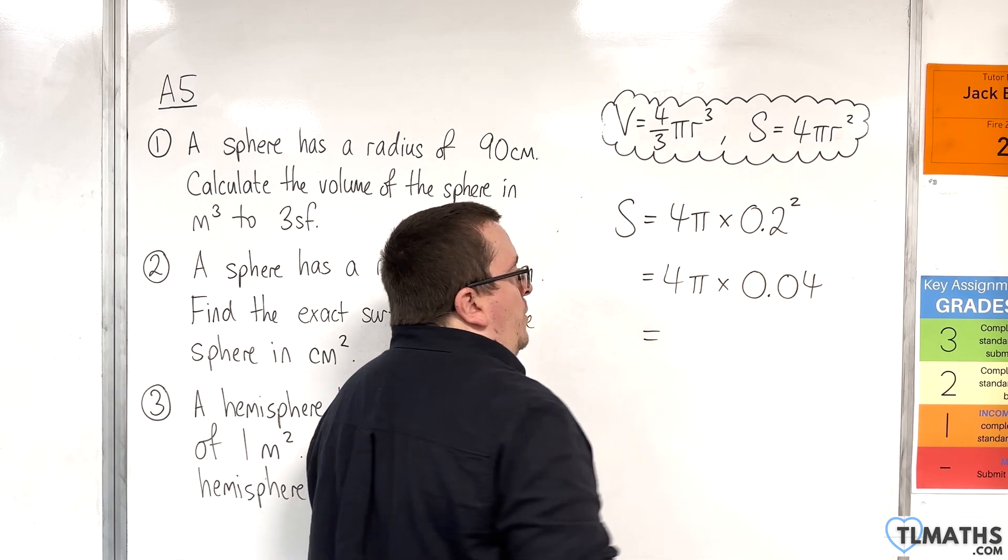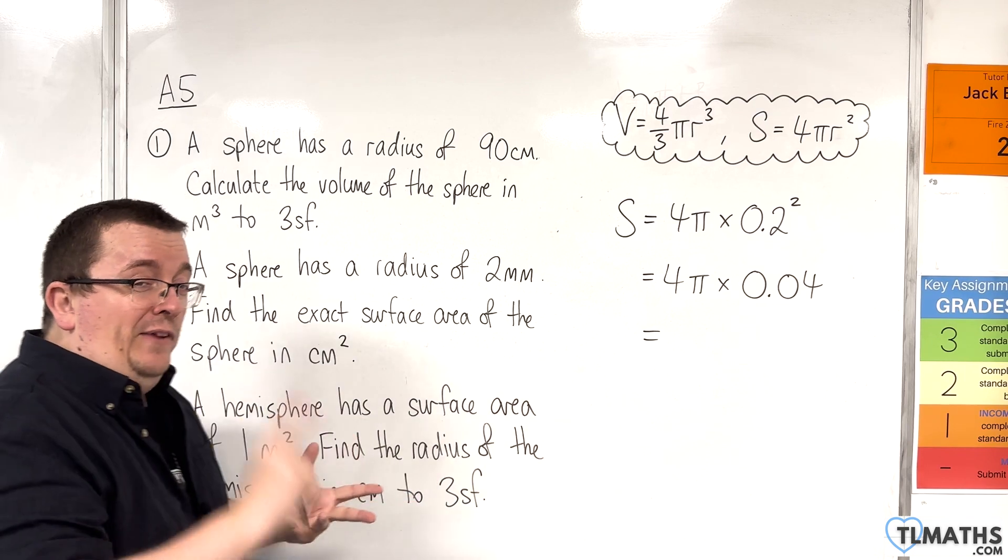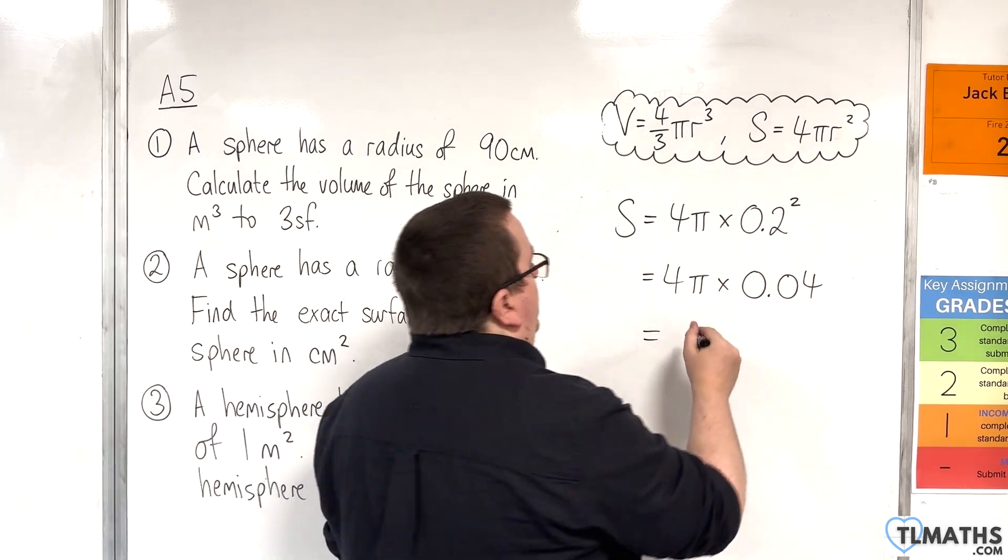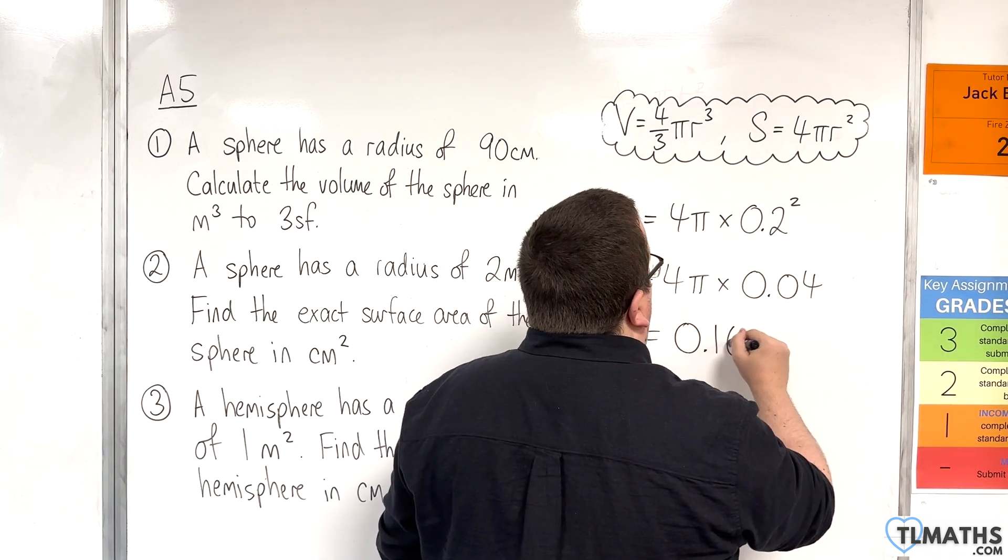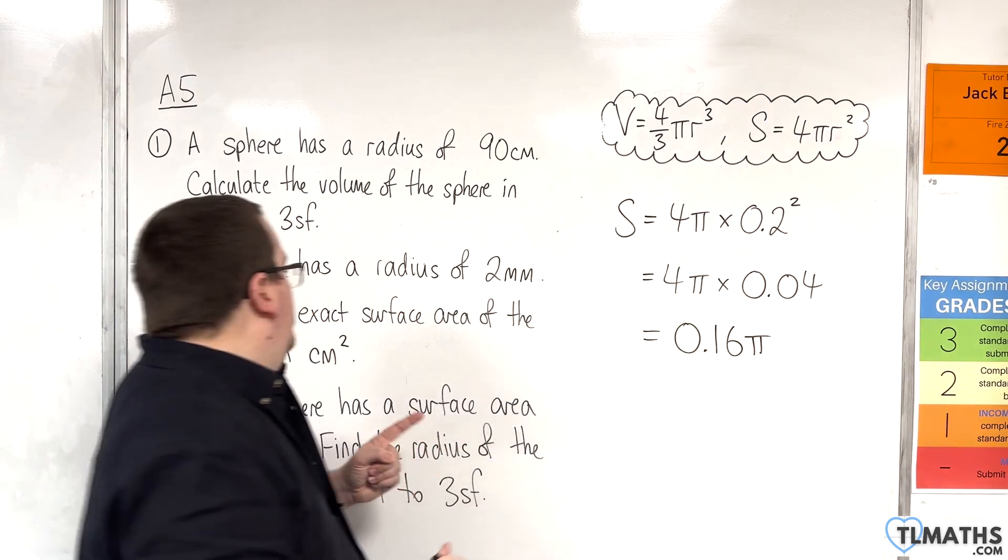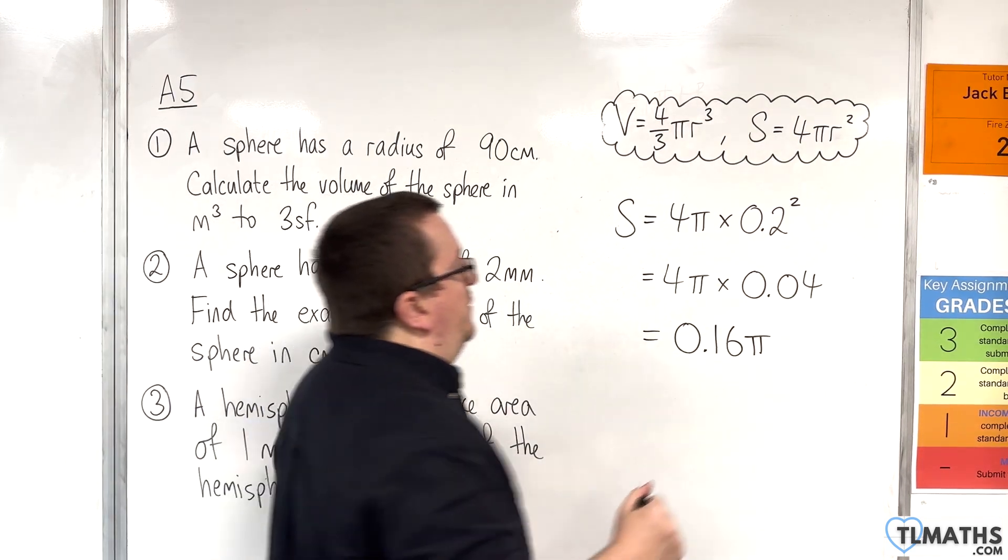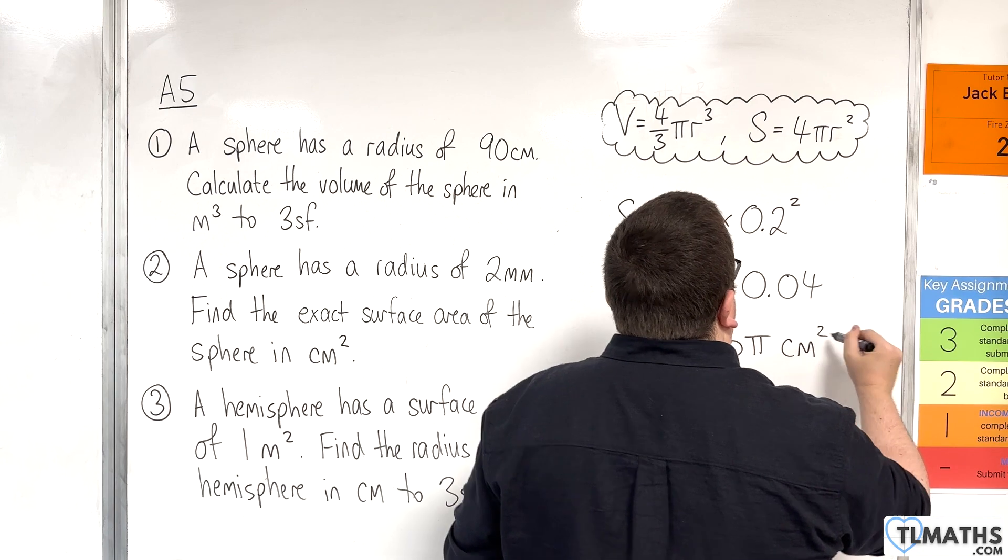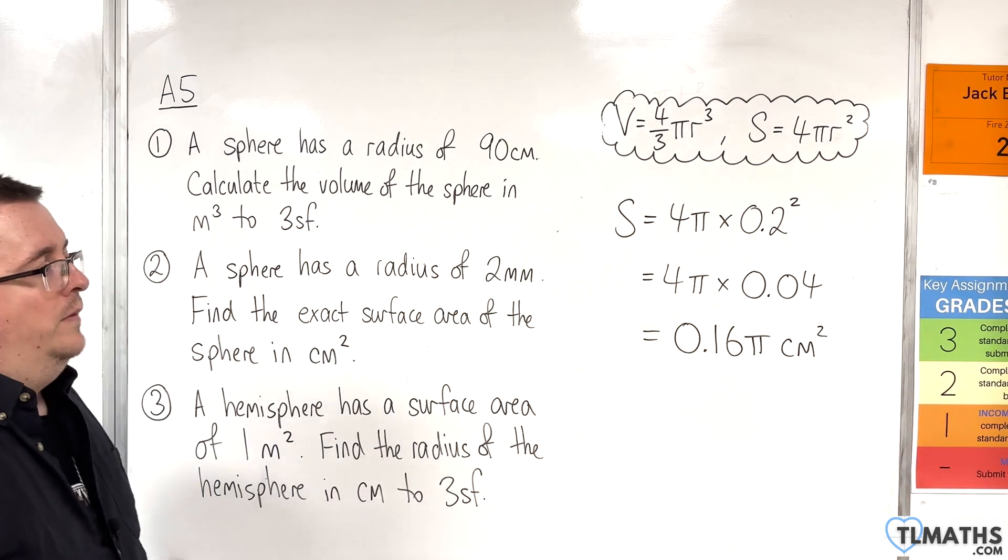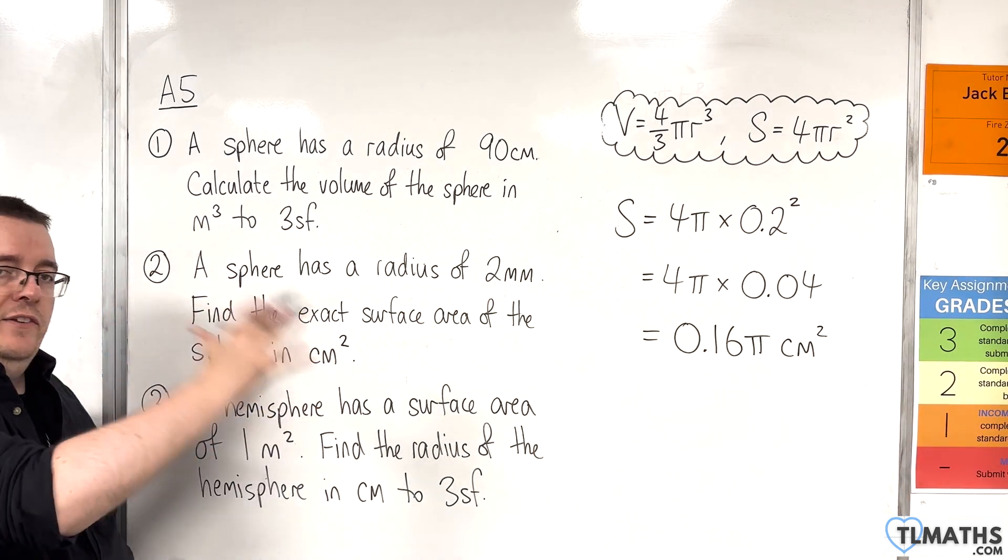Now, four lots of 0.04 will be 0.16. So that's 0.16 pi, and I want to make sure I've got the units square centimeters. OK, and so that is an exact answer.